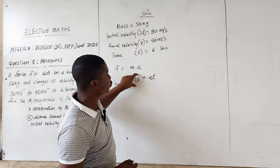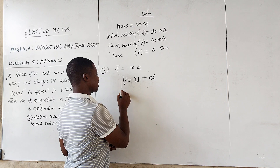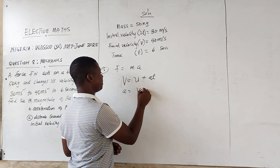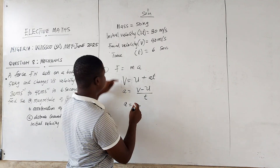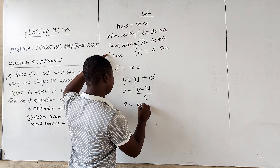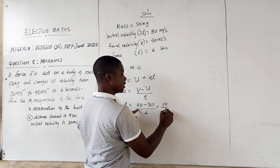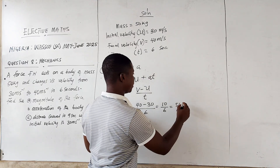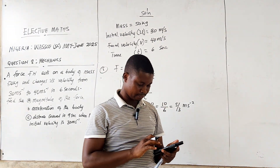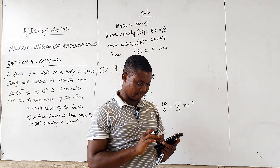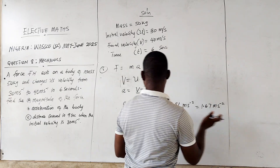We know our final velocity, our initial velocity u, and our time t, so it's straightforward to find a. Making a the subject: a = (v − u) / t. Substituting: a = (40 − 30) / 6 = 10/6 = 5/3, which equals 1.67 meters per second squared. So that is our acceleration.